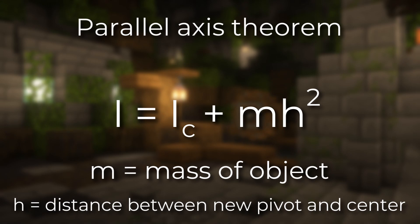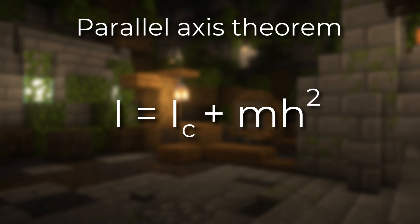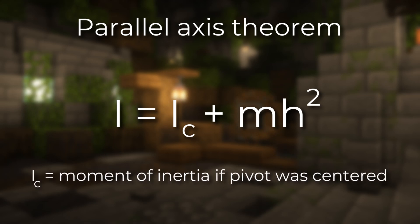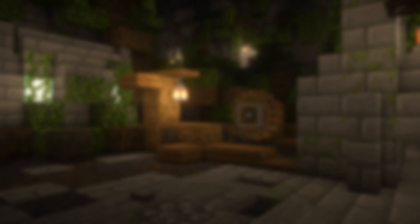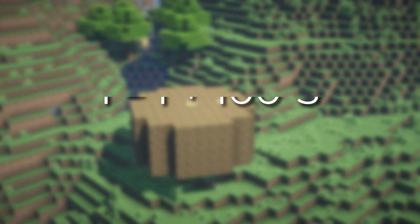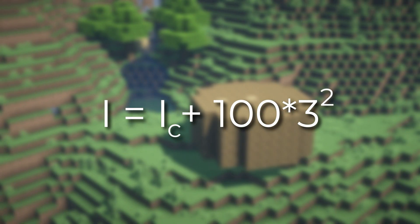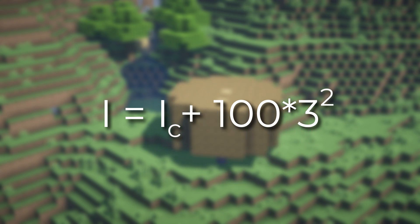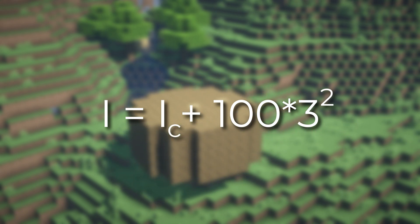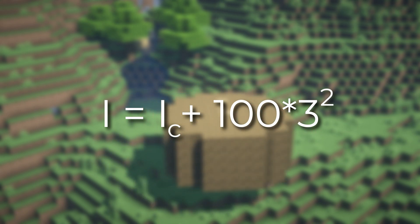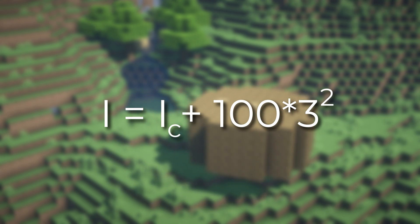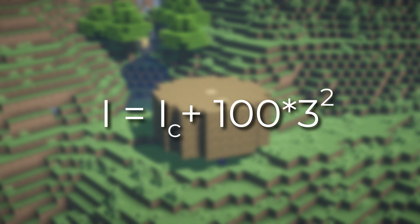The I sub c is the moment of inertia if we had put the pivot in the middle. So by this formula, our new moment of inertia equals I sub c plus 100 times 3 squared — 100 since the mass is 100 kilograms, and 3 since the distance between the center and the new axis is 3 meters.